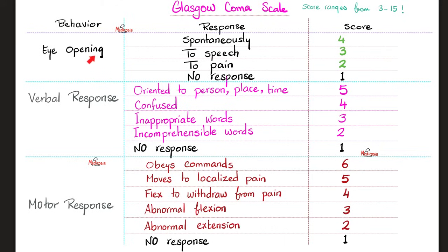A normal person opens their eyes spontaneously — that's a score of 4. Verbal response should be oriented to person, place, and time — that's 5 points. Add 6 points for obeying commands easily, and you have 15 total. That's the highest score. The lowest score is 3: 1 point each for no eye response, no verbal response, and no motor response. There is no such thing as a Glasgow Coma Scale of 0.